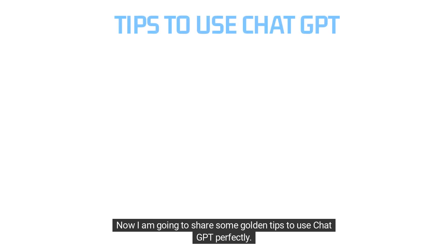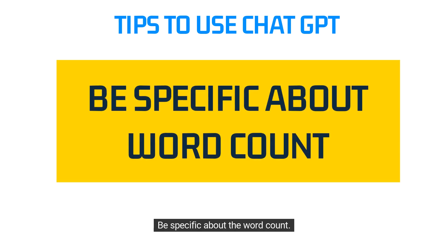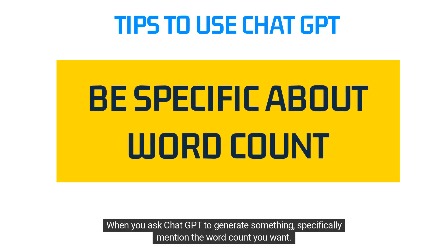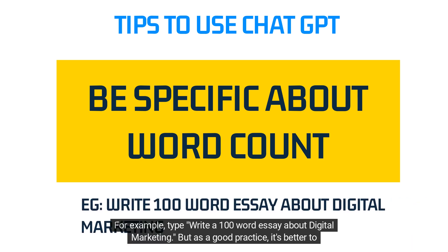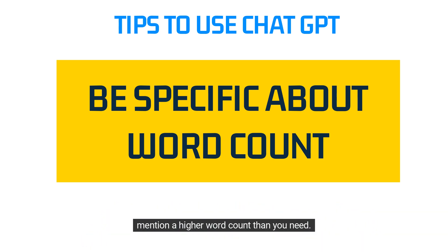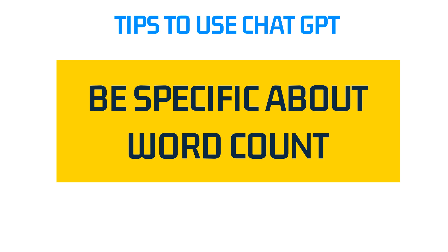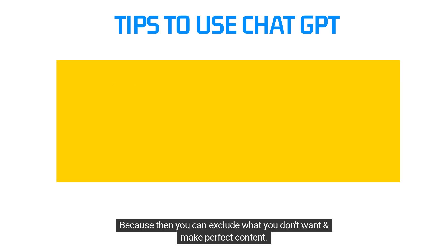Now I'm going to share some golden tips to use ChatGPT perfectly. First, be specific about the word count. When you ask ChatGPT to generate something, specifically mention the word count you want. For example, type: write a 100-word essay about digital marketing. As a good practice, it's better to mention a higher word count than you need, because then you can exclude what you don't want and make perfect content.